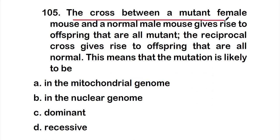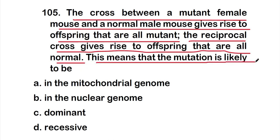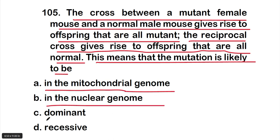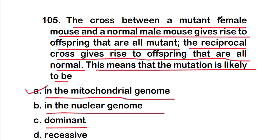Question 105: a cross between a mutant female mouse and a normal male mouse gives rise to offspring that are all mutant. The reciprocal cross gives rise to offspring that are all normal. This means the mutation is likely to be: Option A in the mitochondrial genome, Option B in the nuclear genome, Option C dominant, Option D recessive. The right answer is Option A — in the mitochondrial genome.